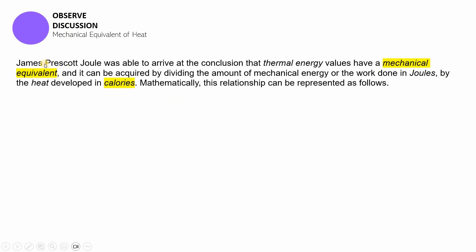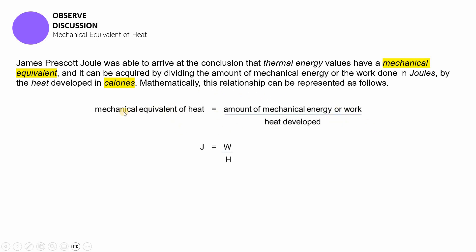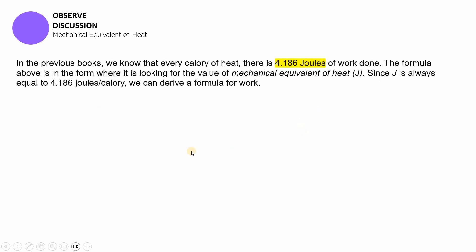Now let's proceed to the last part of this session, which is a discussion under Observe about the mechanical equivalent of heat. James Prescott Joule was able to arrive at the conclusion that thermal energy values have a mechanical equivalent, and it can be acquired by dividing the amount of mechanical energy — or the work done in joules — by the heat developed in calories. In formula form, the mechanical equivalent of heat J is equal to the work W divided by the heat developed H.